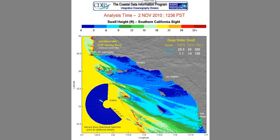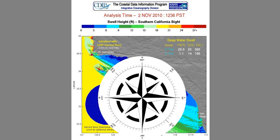What does a compass direction of 300 mean? You might remember from other labs that we divide the compass into a 360-degree circle where north is zero and the numbers increase clockwise, so that due east is 90, due south is 180, and so on. So swells coming from a compass direction of 300 are coming in like that red arrow right there, because that lines up with 300.